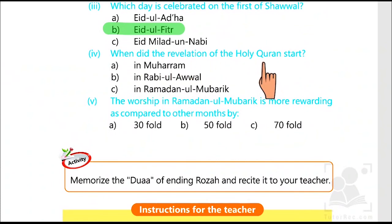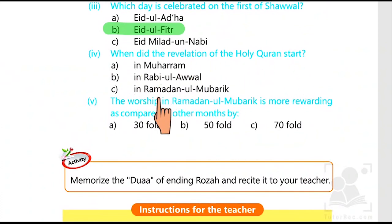When did the revelation of the Holy Quran start? The options are in Muharram, in Rabi ul-Awwal, or in Ramadan-ul-Mubarak. The correct answer is in Ramadan-ul-Mubarak.